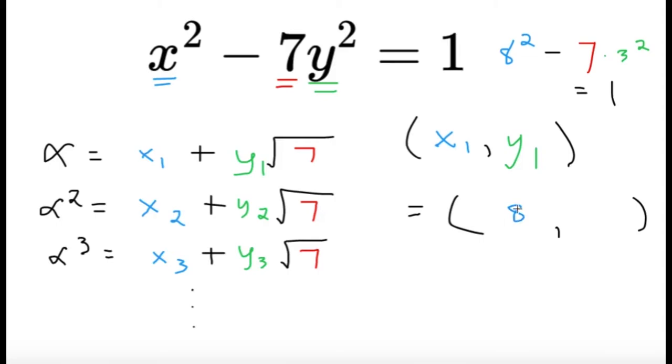And we'll be able to get that alpha here is equal to 8 plus 3 square root of 7. And we'll be able to use this to generate other solutions.